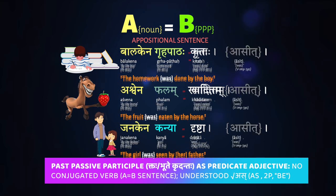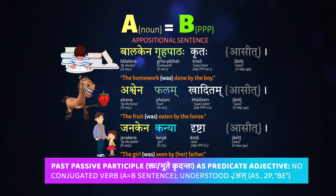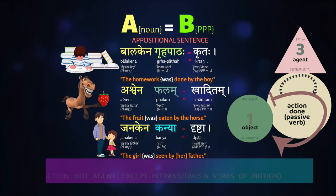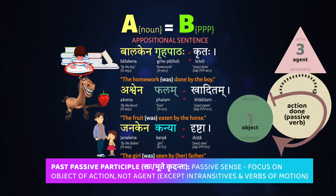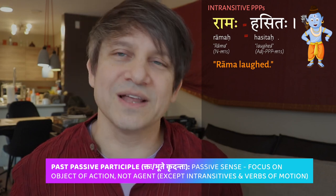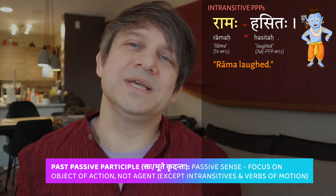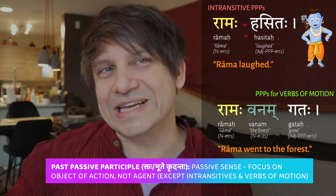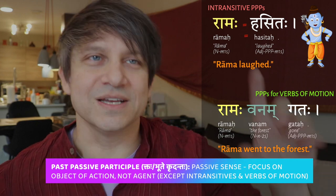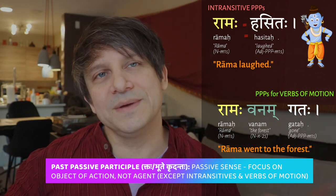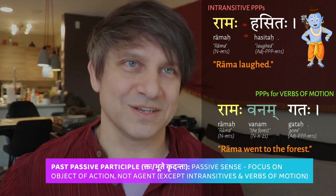We have to understand it as an understood asti, or rather asit — the imperfect past of 'as'. Palam kaditam asit — the fruit was eaten. In all these sentences the participles function in a passive sense where the focus is on whatever object the action of the verb is happening to — that's what's in the nominative. There are exceptions of course, like intransitive PPPs or PPPs for verbs of motion like gata, where the PPPs are used in an active sense, but generally the PPPs are used in a passive construction.